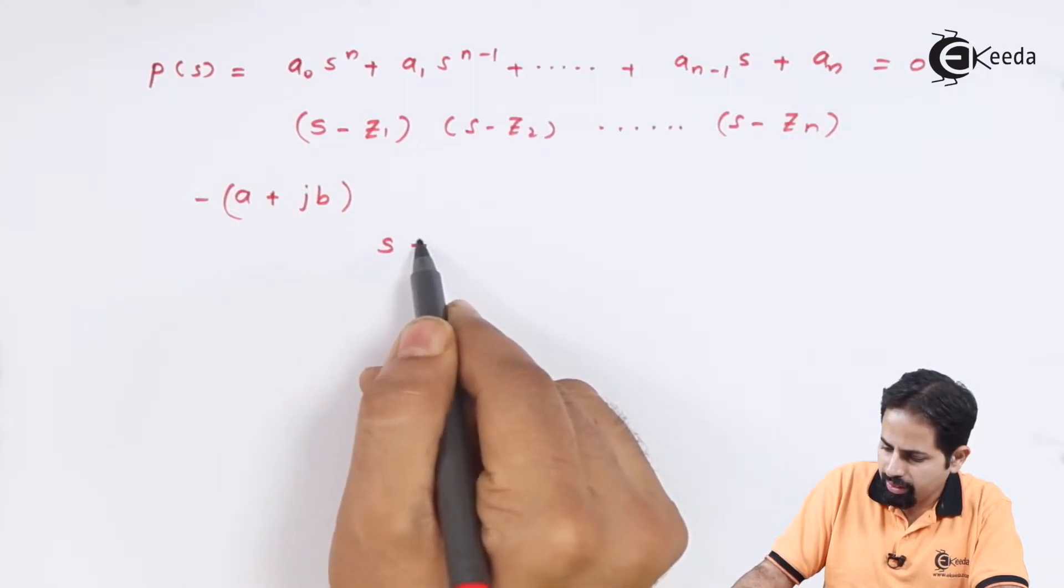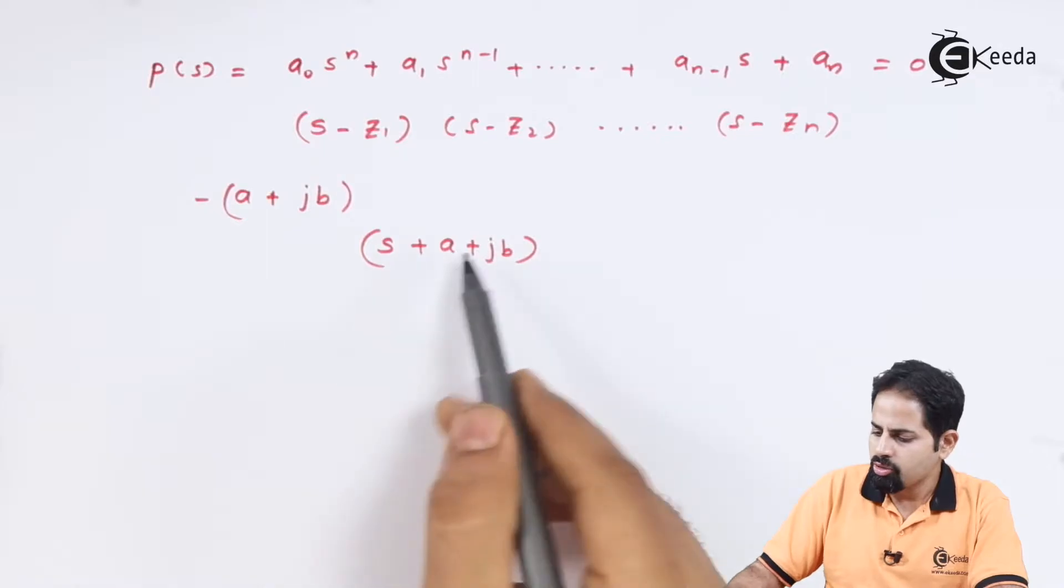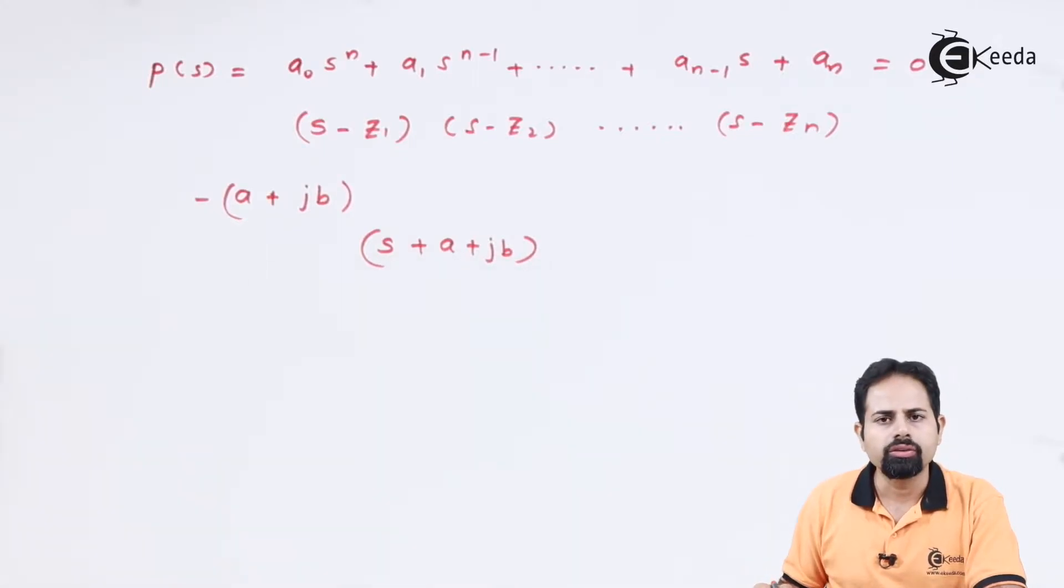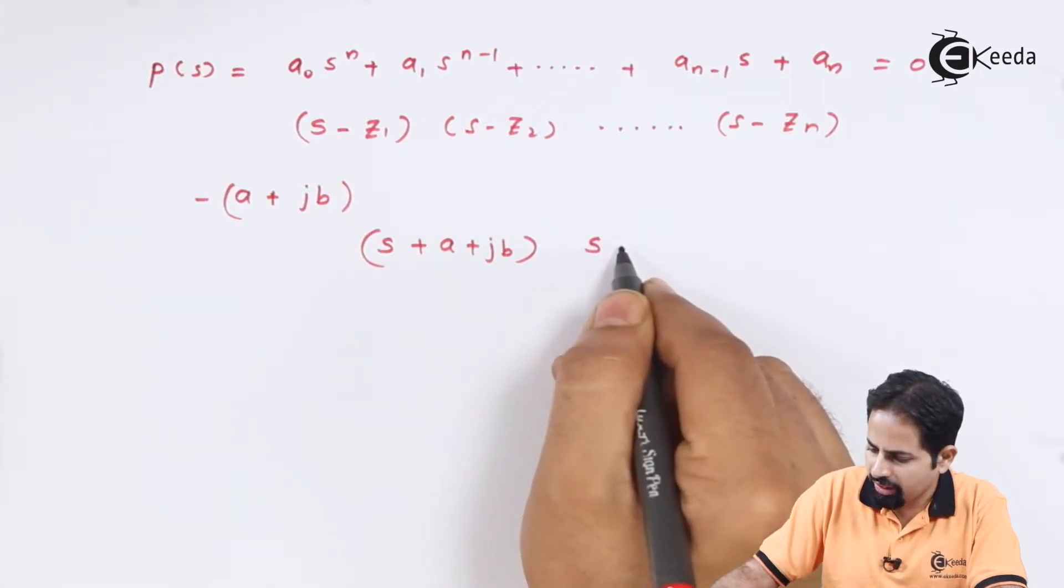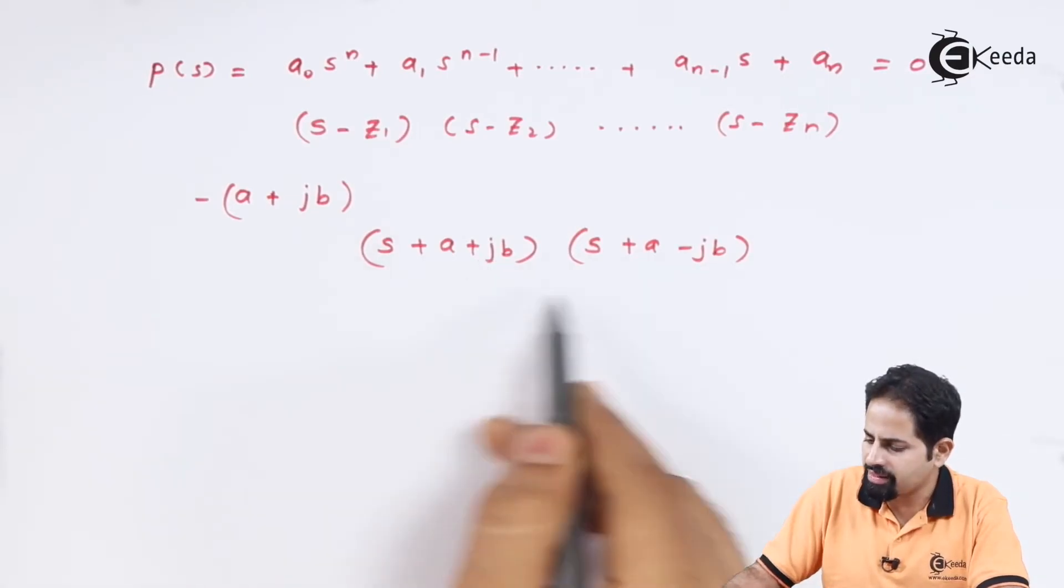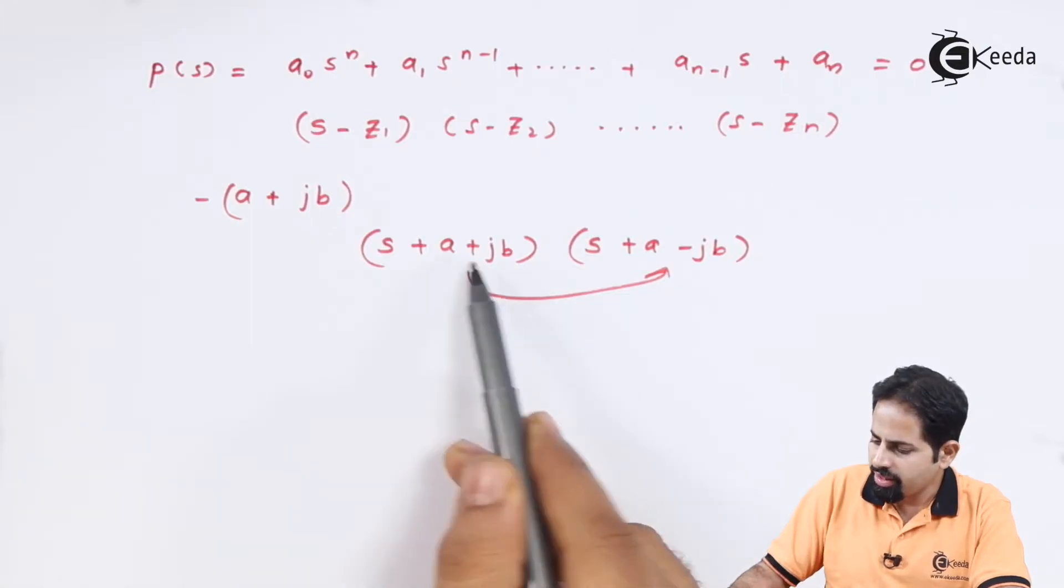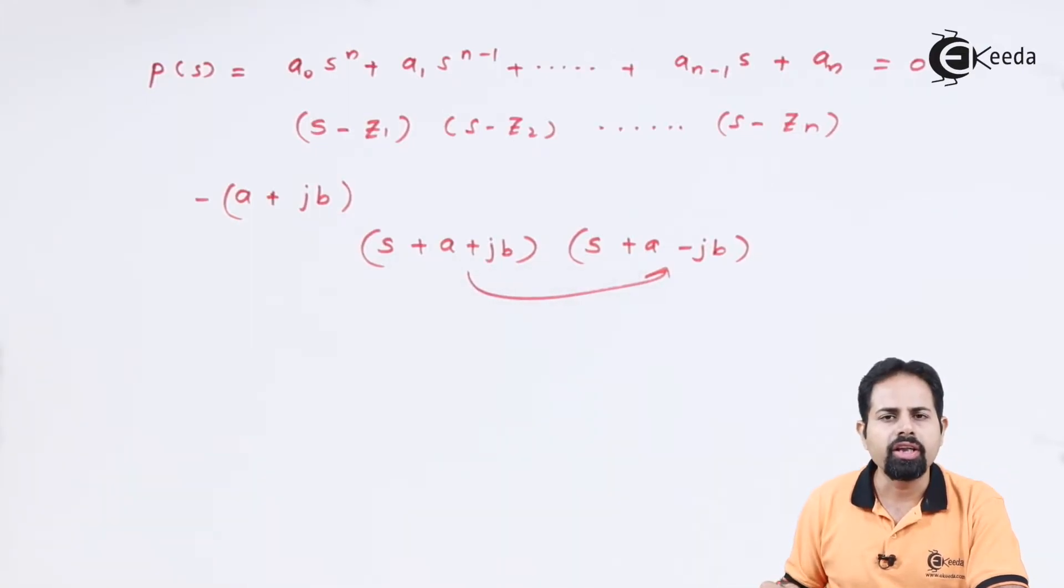We will write it as S plus A plus JB here. So if there is such a root and such a factor, then the rule says that there will be one more factor or one more root, at least there will be one more factor which will be exactly complex conjugate of this. The reason is if you multiply both, the negative term goes as well as imaginary terms go. So we will see how.